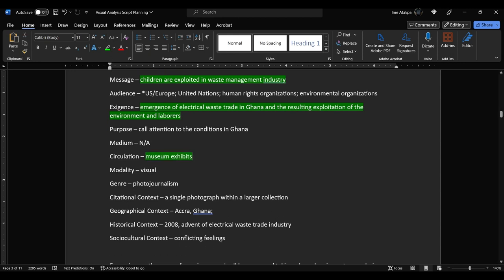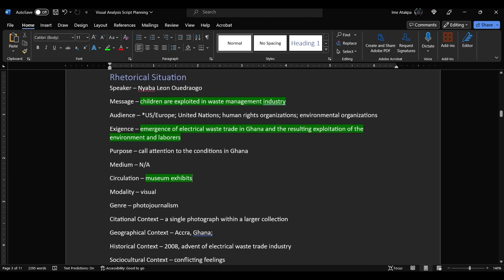Citational context, I had to Google this. Single photograph within a larger collection. Remember, citational context refers to whether or not this communication is in good company, so to speak. And it's in this case surrounded by other photographs from the same set. Geographical context, this was research. Accra, Ghana is where these photographs were taken, and that is the capital of Ghana.